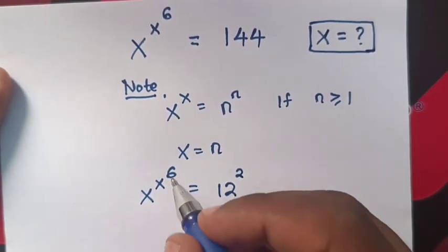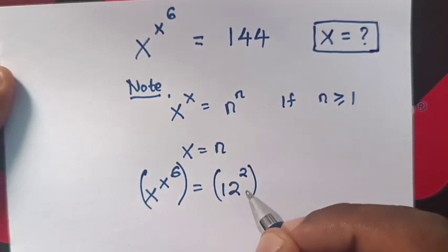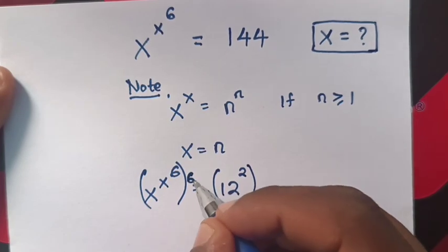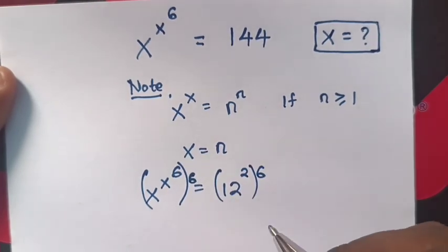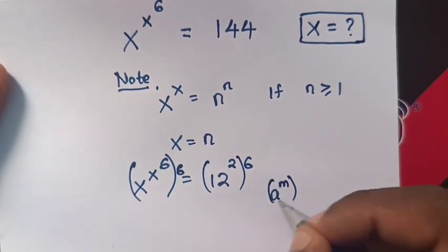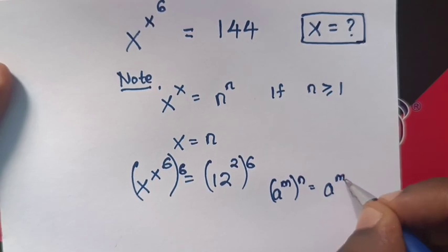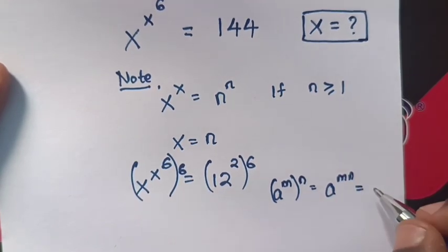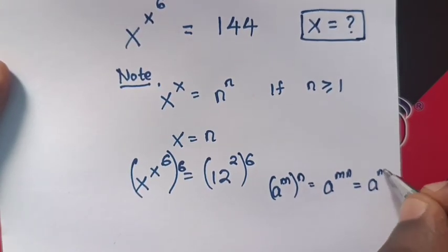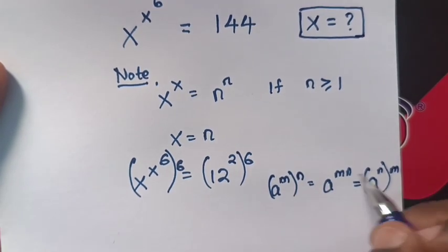Next step, we multiply by power of 6 on both sides. Then we apply the exponential rule that a power m bracket power n equals, when we multiply powers, a power mn equals a power n bracket power m. So we exchange the powers.